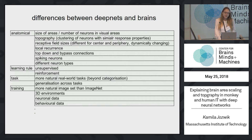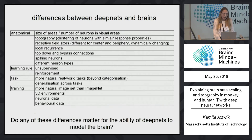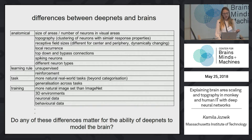These differences can be divided into anatomical, learning rule, task, and training-based categories. And the question is: do any of these differences matter to the ability of deep nets to really model the brain?